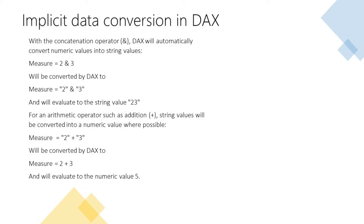Depending on the requirements of an operator, DAX will also try to convert numbers into strings and strings into numbers. For example, when using the concatenation operator DAX will automatically convert number values into string values. In this example we have a measure combining two numeric values with the concatenation operator, but before concatenating them DAX converts them to string values and evaluates the result as a string with a value of 23. For an arithmetic operator such as addition, string values will be converted into numeric values where possible. In the next example we have a measure combining two string values using the addition operator — before adding them together they are converted to numeric values and DAX evaluates the measure as a numeric with a value of 5.